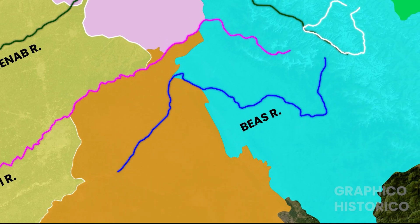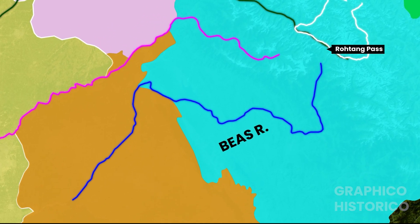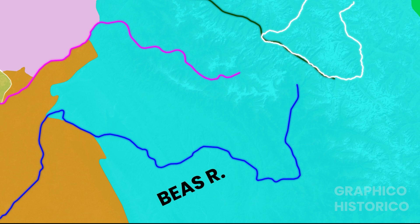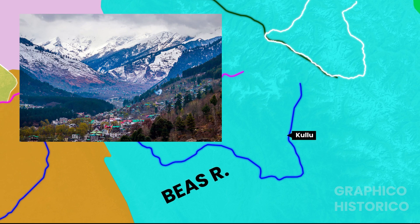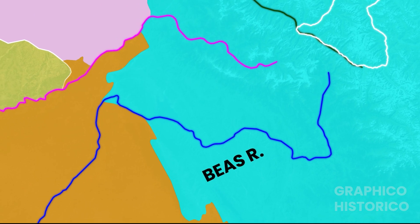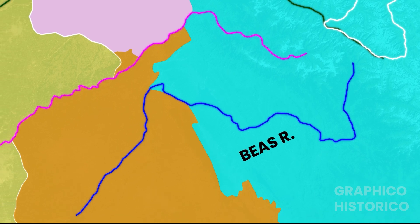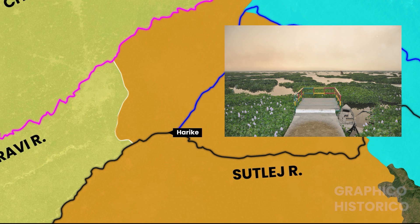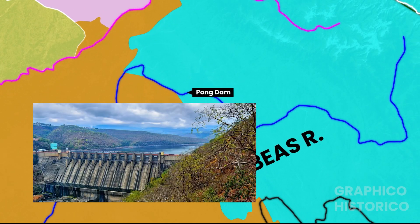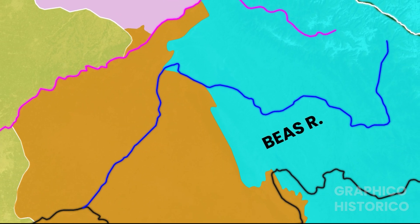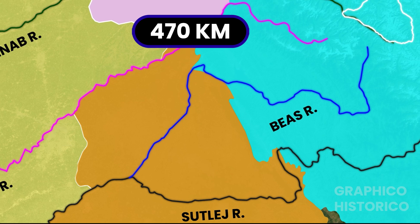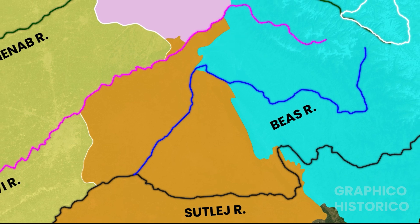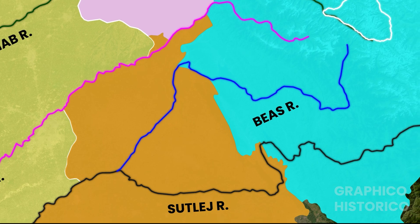Now, the Beas river — called Vipasha in Sanskrit — also originates near Rohtang Pass. The famous Kullu valley is situated here. It flows westward, and after entering Punjab at Harike, it meets the Satluj river. The Pong Dam is situated on this river. Its total length is 470 km. Among all the main tributaries of the Indus, the Beas is the smallest.